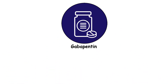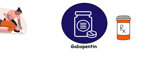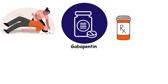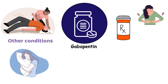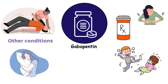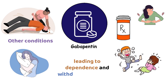Gabapentin is a prescription medication used to treat epilepsy, neuropathic pain, and other conditions. It can produce sedative effects and feelings of relaxation when abused, leading to dependence and withdrawal symptoms.